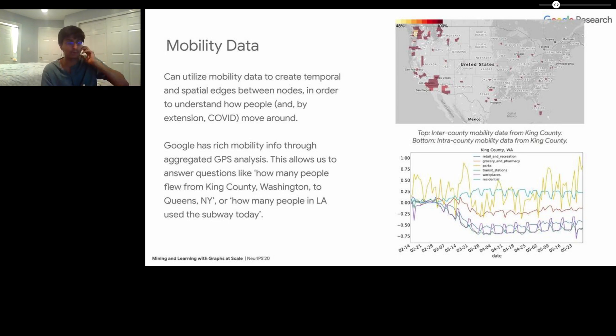We still think that the trend is super important and powerful on its own because it allows us to answer questions like how many people flew from King County, Washington to Queens in a given month? How many people in LA used the subway today? If you're trying to model disease dynamics based on how people are coming into contact, these kinds of mobility information are fundamentally critical to understanding how COVID is going to spread through our societies.